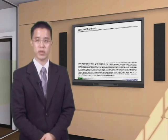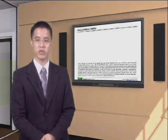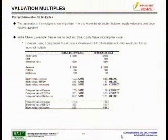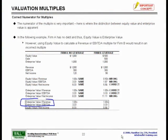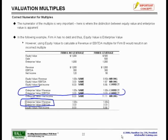What we are trying to say is that enterprise value divided by revenue and EBITDA is the correct ratio. In other words, enterprise value over revenue and enterprise value over EBITDA — these are the correct ratios to use. Likewise,